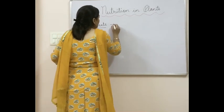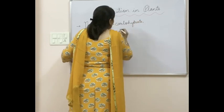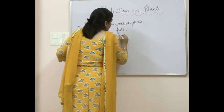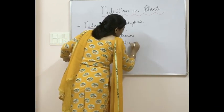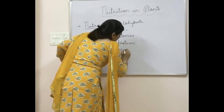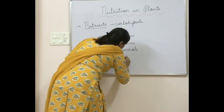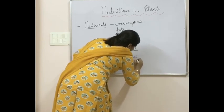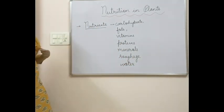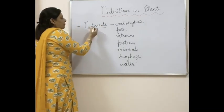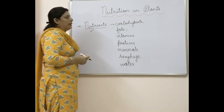As you have read in your sixth class, nutrients can be carbohydrates, fats, vitamins, proteins, and minerals. Along with this, there are other components also, like roughage and some amount of water. All these are the components of food, but all are not considered as nutrients.